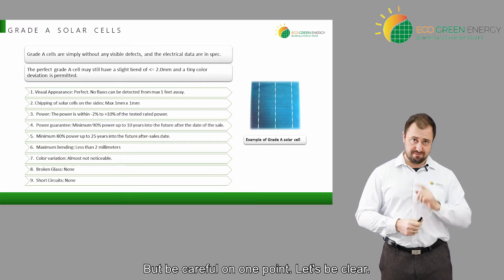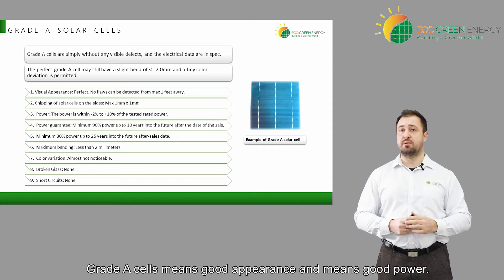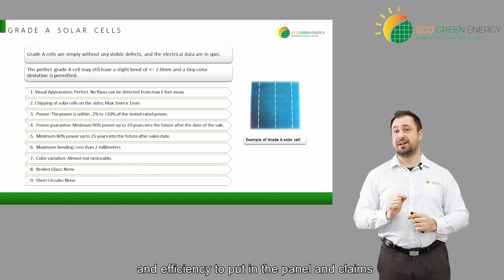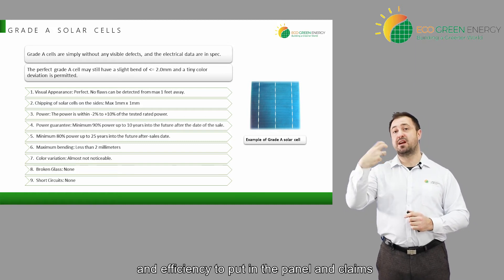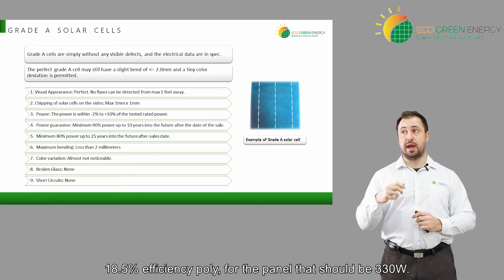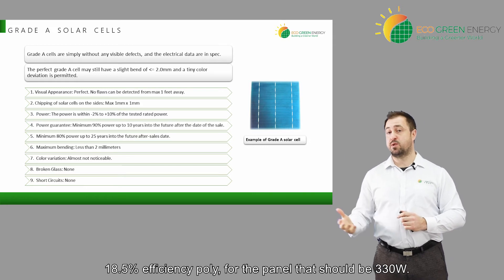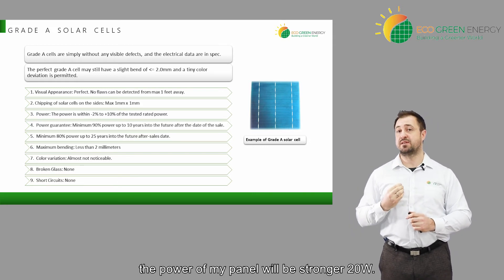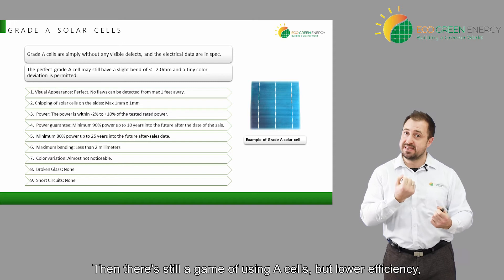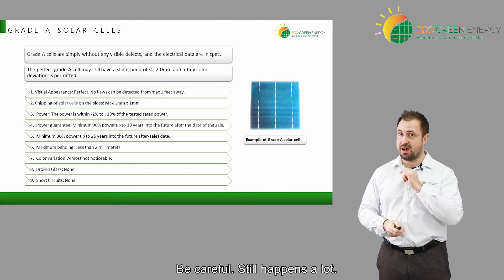But be careful on one point. Grade A cells means good appearance and good power, but in some cases we can use grade A cells with lower power and efficiency in the panel and claim that the panel is a higher power. For example, using grade A cells at 18.5% efficiency poly — for a panel that should be 330 watts — if you use that efficiency of cells, the power of your panel will only be 320 watts. So there is still a game of using A cells but at lower efficiency than what is promised on the panel. Be careful — this still happens a lot.